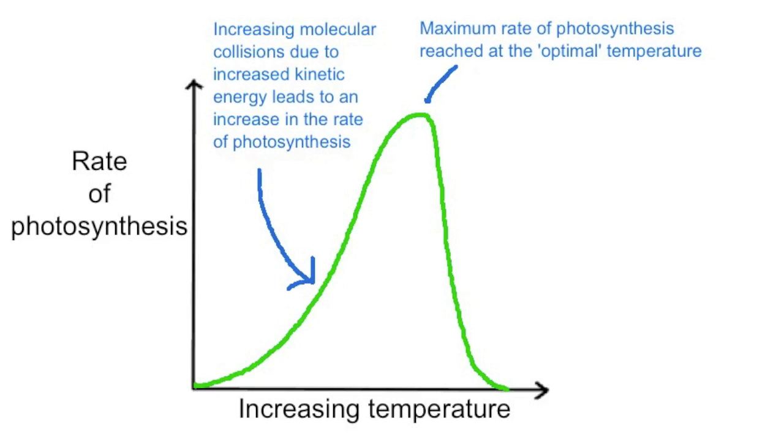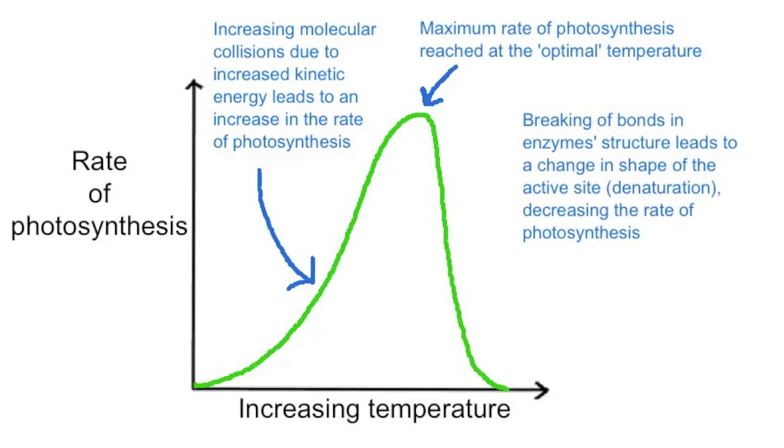Beyond that, further increasing temperature leads to breaking of bonds within the enzymes and therefore loss of shape of the active site. We refer to this as denaturing of enzymes. At that point, the rate of photosynthesis will decrease.